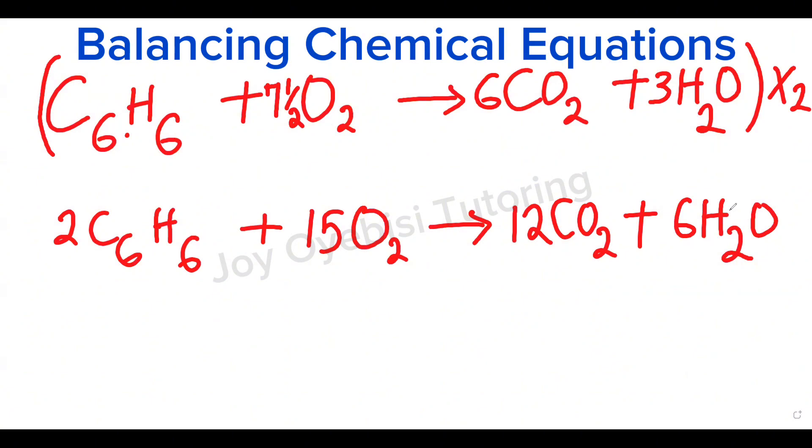And this is your balanced equation. So whenever you have an odd number situation, use a fraction to balance it. Especially if the atom is standing alone. And then multiply the whole equation by two and that gives you your balanced equation.